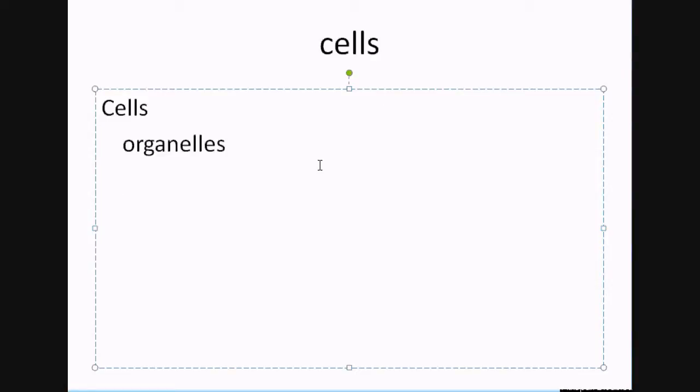Organelles are structures that are specialized. A nucleus, a mitochondria, and so on and so forth—these are specialized items that do things. We won't be going over all the individual ones because that's not what this one is about.